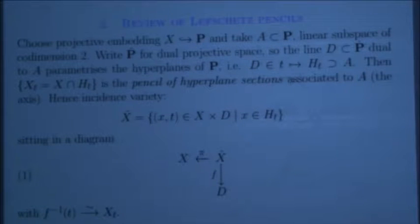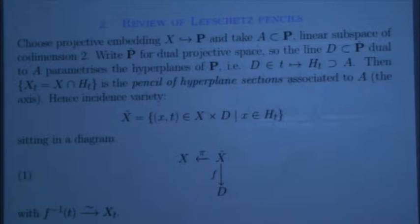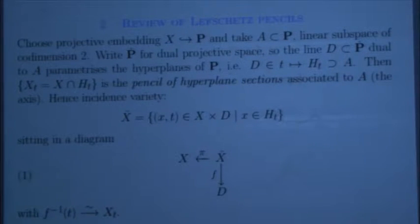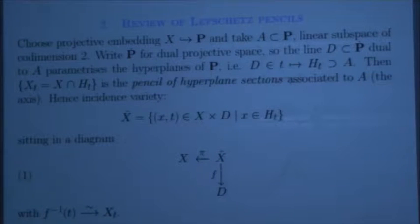I need to review Lefschetz pencils. A Lefschetz pencil is a fibration of a variety which is as nice as it can be. I start from my even-dimensional smooth projective variety X and put it in a projective space. I take a linear subspace A of codimension 2 in P, then consider the hyperplanes containing A — you think of them as running around A. That's the pencil. You intersect this pencil with X and get a pencil of hyperplane sections associated to A, parametrized by the dual line D in the dual projective space.